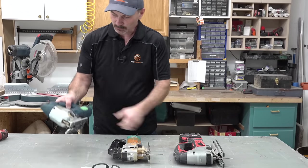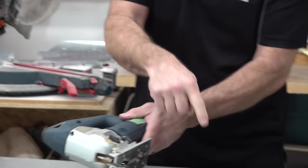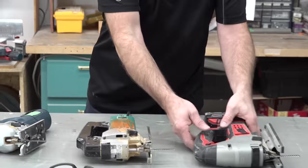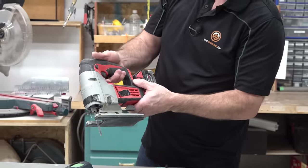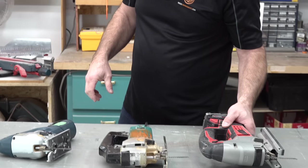So some of them also will have where you can lock the trigger on when you're using it. These two both do that. This one doesn't. This one actually has a lock to lock the trigger out so you can't squeeze it or bump it on by accident. It's kind of a safety feature.